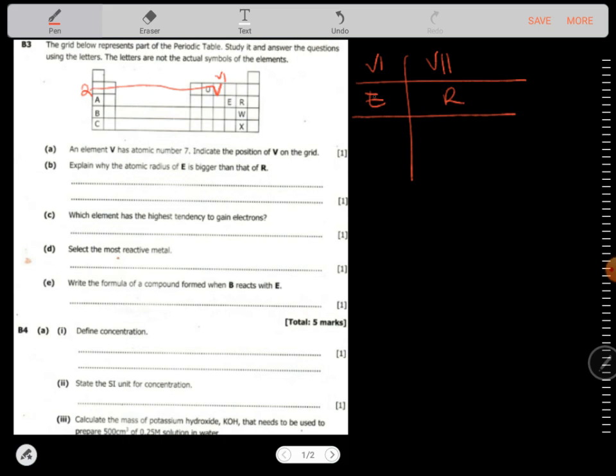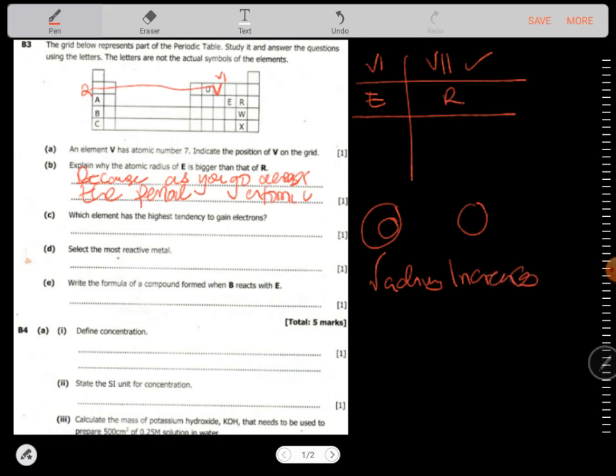So you can tell that this one has a small radius. This one has a bigger radius because this is only found in group 6. This one is found in group 7. That means another reason is because as you go across the period, across the period, what happens, atomic radius increases. That's what happens.